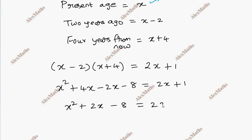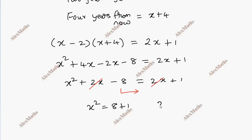The like terms add: x squared plus 2x minus 8 equals 2x plus 1. The 2x terms cancel on both sides, giving x squared minus 8 equals 1, so x squared equals 9.